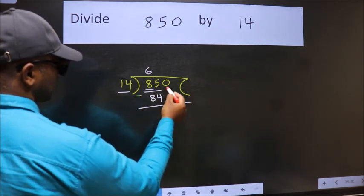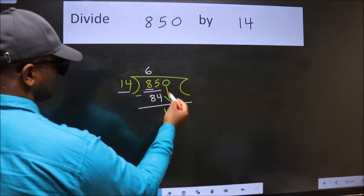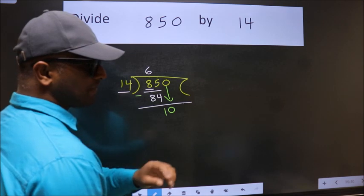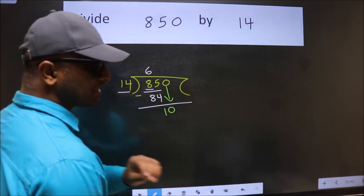After this, bring down the beside number. So 0 down. After this step, the mistake happens.